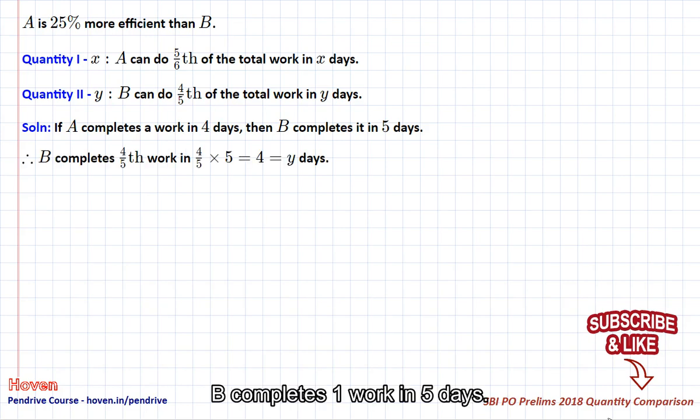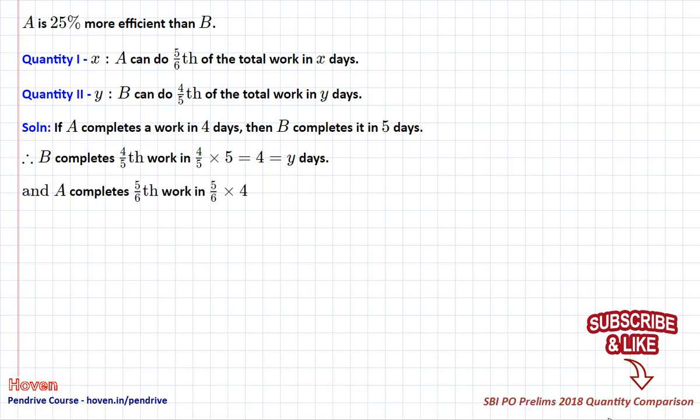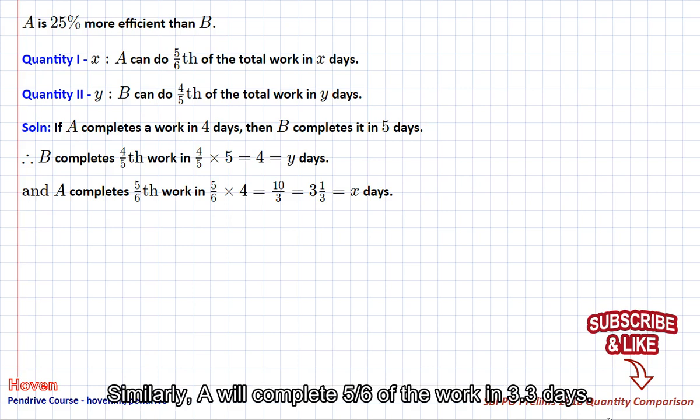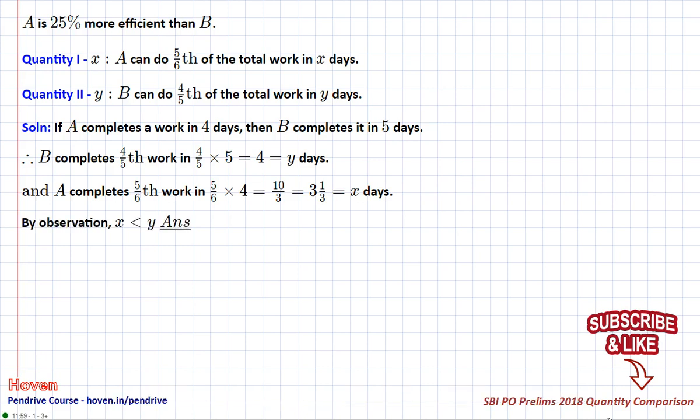B completes one work in 5 days, so B will complete 4 fifths of the work in 4 days. Similarly, A will complete 5 sixths of the work in 3.3 days. Hence x is less than y.